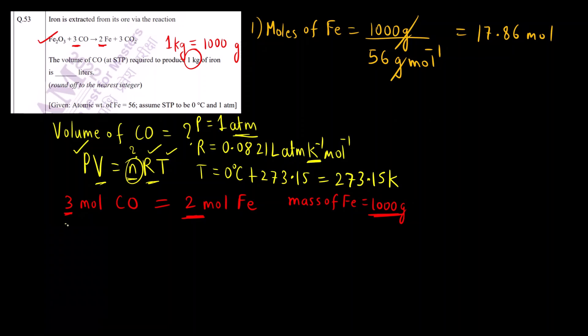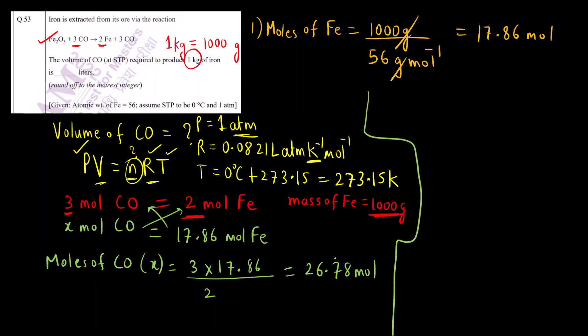Now we can find out the moles of CO. Let us say x mole of CO gives 17.86 mole of Fe. Now we can find out moles of CO by cross multiplying. X is equal to 3 into 17.86 divided by 2. This comes out to be 26.78 moles. Now we have got the moles of CO.